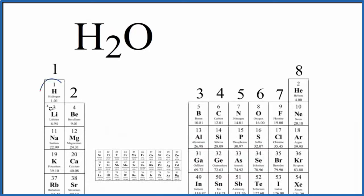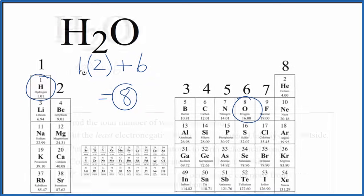So hydrogen, that's in group 1. All the elements in group 1, 1 valence electron. And we have 2 hydrogen atoms. Oxygen, group 16, sometimes called 6A, 6 valence electrons. 2 plus 6 gives us a total of 8 valence electrons for the H2O Lewis structure.